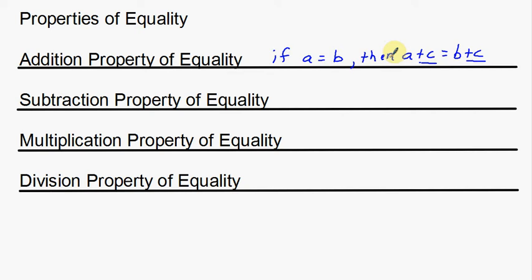Now that should sound really familiar. You hear that all the time from your math teacher when you start solving equations: whenever I add something to one side of the equal sign, I must add it to the other side. So these are properties that are basically used when we solve equations, and we are just taking these properties and writing them down as rules, as properties.